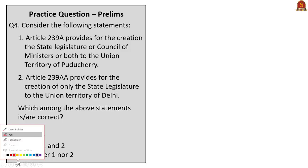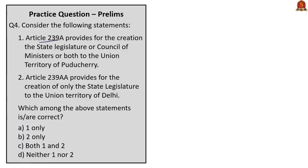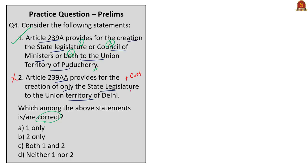Fourth question: Consider the following statements. Statement 1: Article 239A provides for the creation of a state legislature or council of ministers or both for the union territory of Puducherry. Statement 2: Article 239A provides for the creation of only the state legislature for the union territory of Delhi. Which statements are correct? Statement 1 is correct — Article 239A provides for the state legislature or council of ministers or both for Puducherry. Statement 2 is wrong — it is Article 239AA (not 239A) that provides for both the state legislature and council of ministers for Delhi. The correct answer is option A, 1 only.